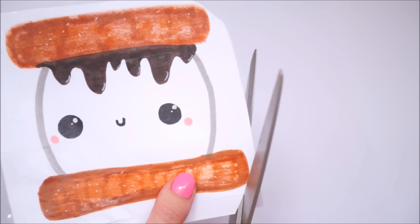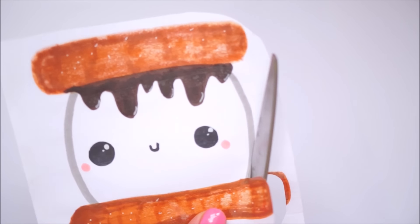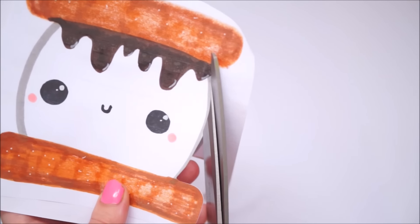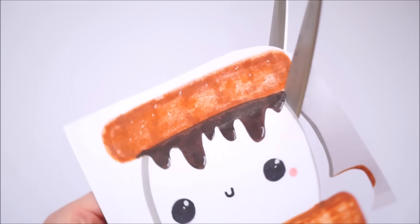I actually cut inwards from where I had drawn to make the biscuit bits a little bit smaller and to cut out some of that grey felt tip pen, because I didn't want the grey being on the marshmallow but I did want a little bit to add for the shadow.